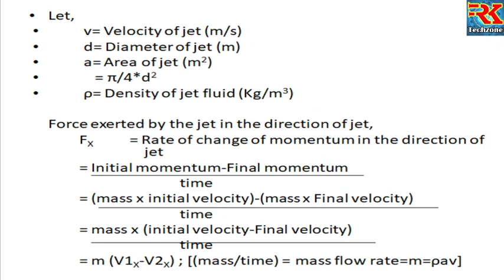Now let's do the derivation. In the x-direction: v is the velocity of the jet, d is the diameter of the jet, a is the area of the jet, and rho is the density of the fluid. Fx is equal to the rate of change of momentum in the direction of the jet.